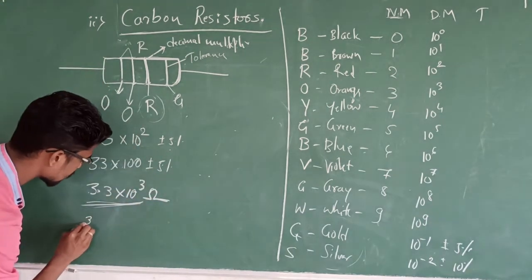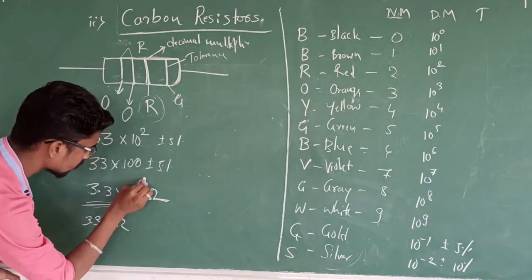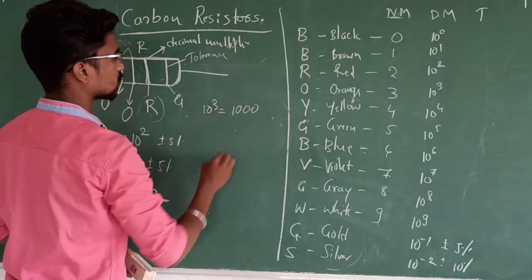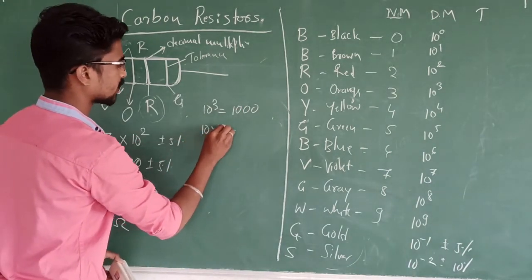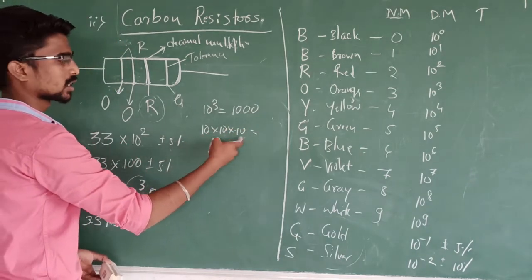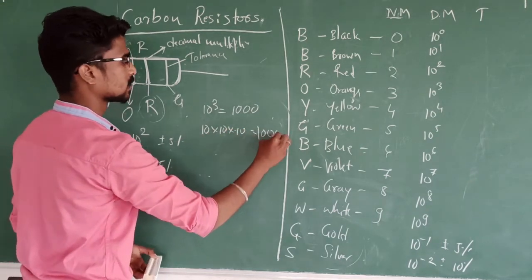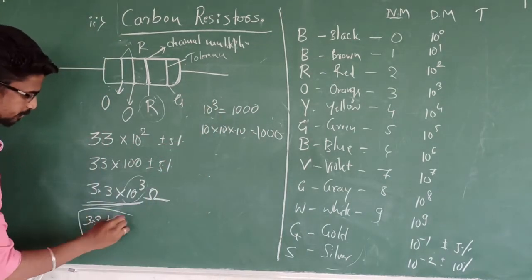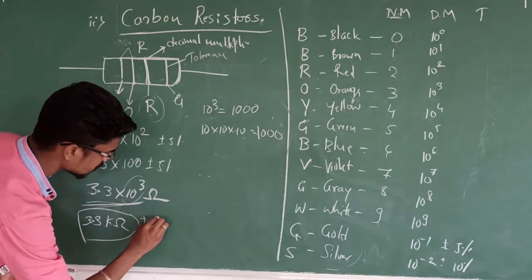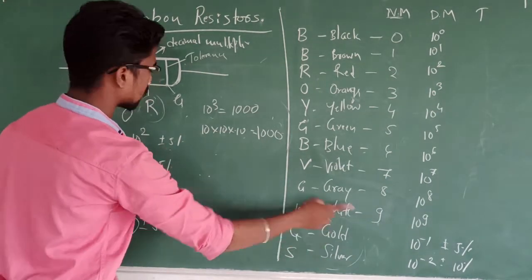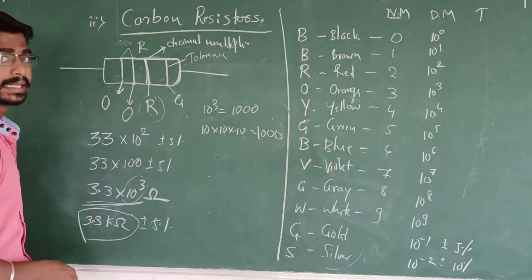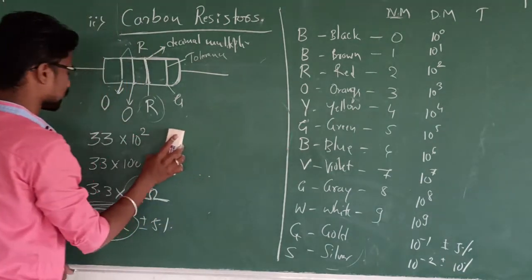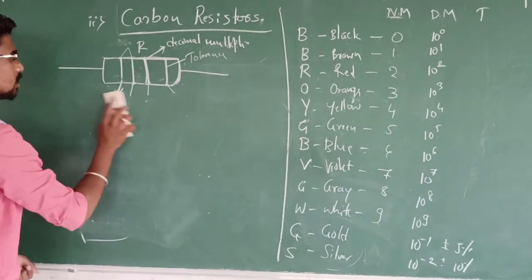So 3.3 × 10³ ohms, which means 3.3 kilohms. The fourth band is Gold, giving a tolerance of ±5%. So the resistance is 3.3 kilohms with 5% variation.